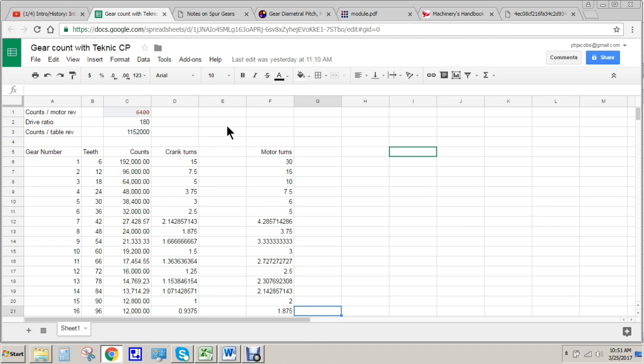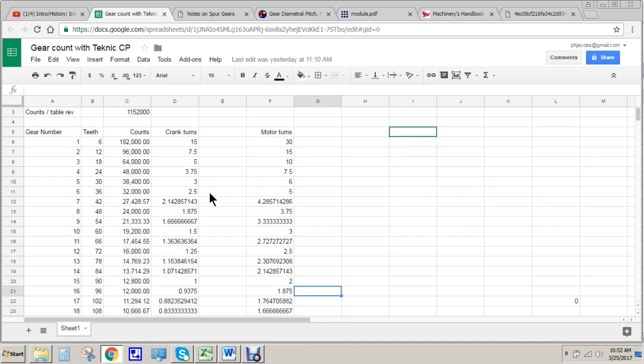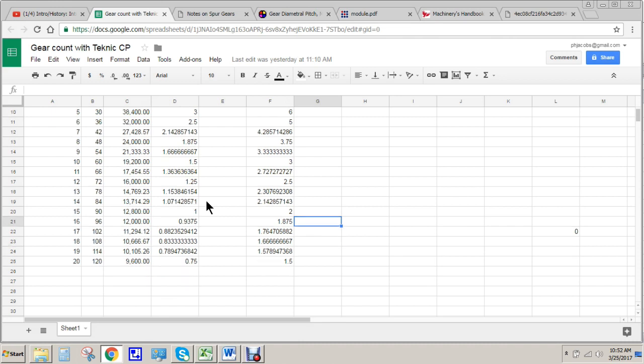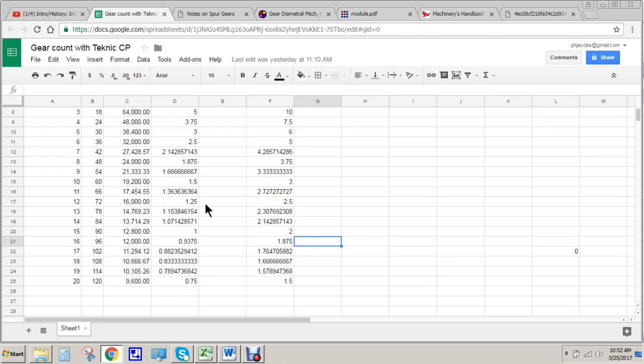We set that resolution at 6,400 counts per revolution. Then there's a drive ratio—the worm gear in the rotary table is 90, and I have a 2-to-1 pulley arrangement. So I have 180-to-1 drive ratio. As you multiply these two numbers together, that gives you the counts—the number of counts or pulses you have to send the motor per table revolution. You can see that's just over a million counts per table revolution. So now if you want to make gears, all you have to do is take this number and divide it by the number of teeth in your gear. That tells you how many counts per tooth. Like the one we made by hand, a 30-tooth gear—the number of counts per tooth would be 38,400.